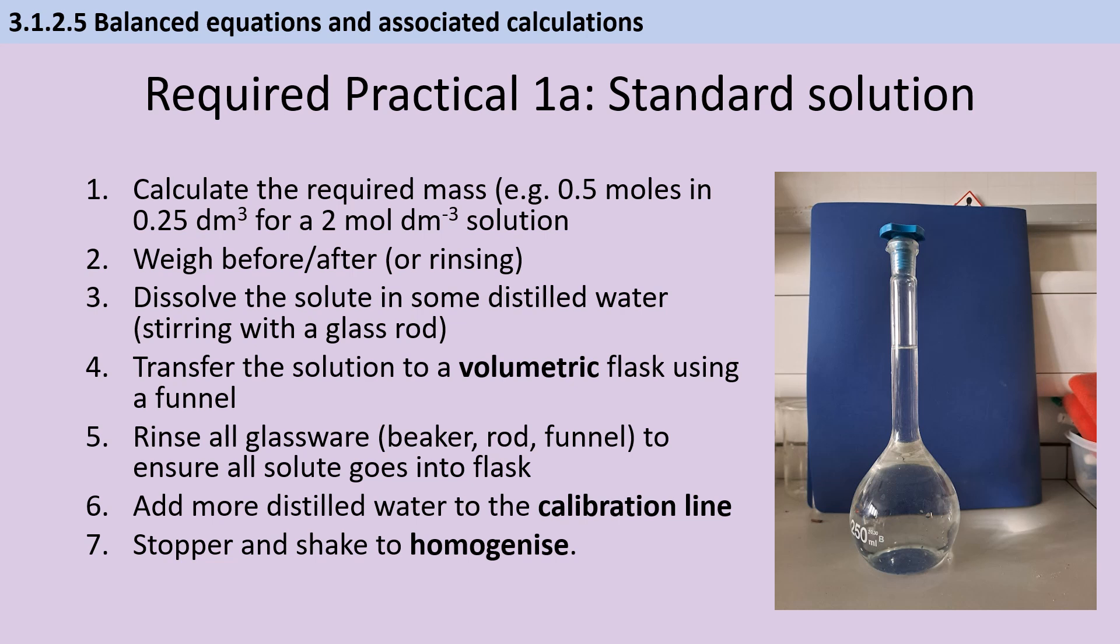In the first part of the first required practical, you make a standard solution. This could be in the context of a calculation-based question where you're given a particular volume and concentration and you need to calculate what mass of solute you need. In terms of the method, the first thing we need to do is weigh out the precise amount of solute, and we need to know how much solute has been transferred to the solution, not just what was weighed out initially. So either you do the weighing before and after method, or you're going to rinse everything into the beaker that you're using to dissolve the solute in. Then you dissolve that solute using some distilled water, stirring it with a glass rod to make sure that everything dissolves fully, and then transfer this solution to a volumetric flask using a funnel. You need to make sure you rinse down all of the glassware you're using with distilled water and that all of those rinsings go into the volumetric flask. You then add more distilled water until the meniscus rests on the calibration line, and you may need to use a dropping pipette in order to do that accurately. You then stopper your volumetric flask and invert it several times to homogenize the solution. This inversion has to happen right at the very end; it's not something that you're doing earlier to make things dissolve.